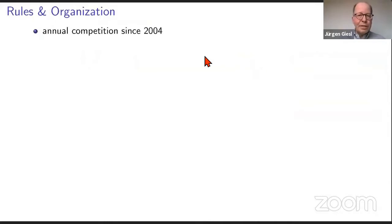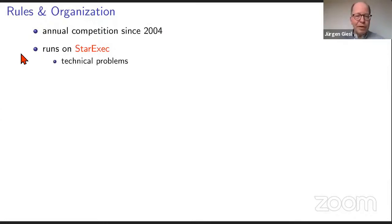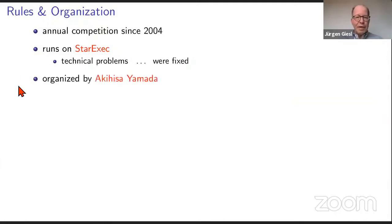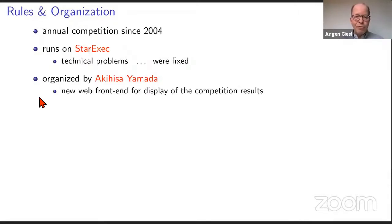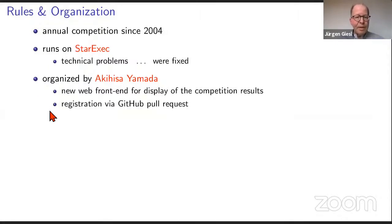This is an annual competition that has taken place since 2004, and it runs on StarExec like many other competitions. There were some technical problems this year, also in earlier years, but luckily they were fixed at the last moment by Aaron Stump and his team, and also by some people from the termination community, so all the tools could run as planned. The competition is organized by Akihiza Yamada — big thanks to him for all the work he did. In particular, he wrote a new web frontend to display the competition results nicely. This time, registration of the tools was via GitHub pull requests instead of sending emails, which eased the organization a little bit.